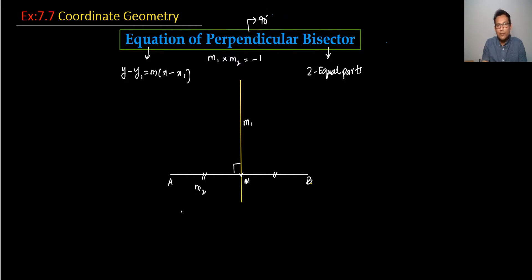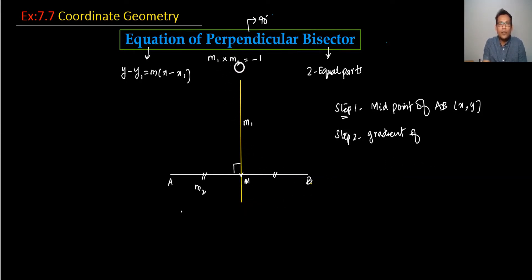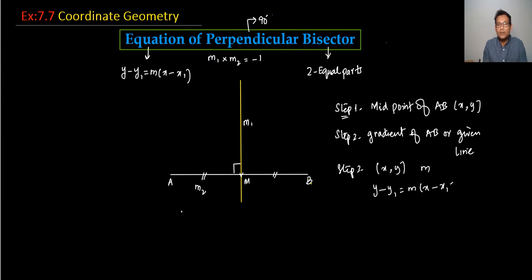So step number one: we always need the midpoint. The yellow line passes through the midpoint, so we need to find the midpoint of AB. Step number two: when you have the midpoint coordinates, you need the gradient of AB. Because we know M1 times M2 equals minus 1, you can then find M2. Step number three: use the midpoint coordinates and M2 to find the equation Y minus Y1 equals M times X minus X1.